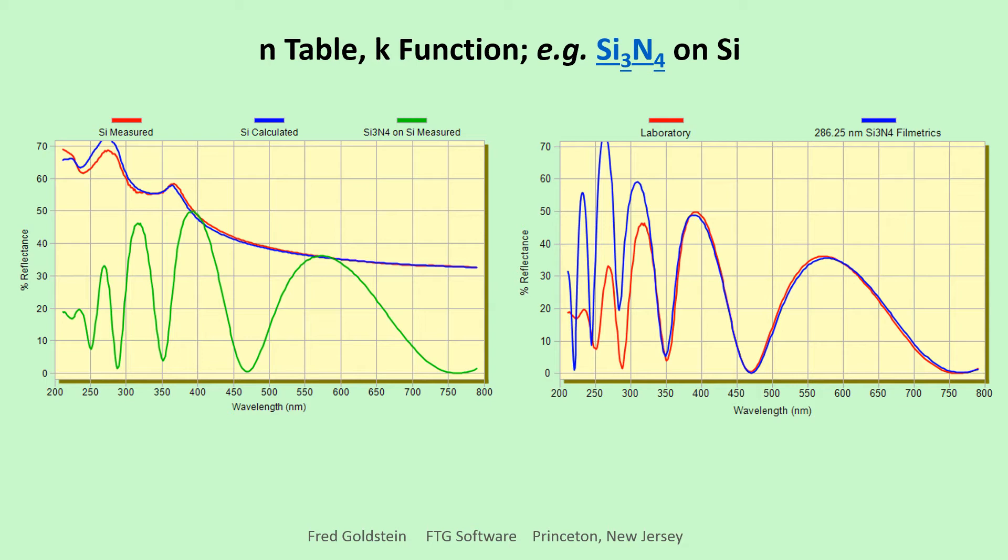Measured silicon reflectance was first compared with calculated reflectance using SOPRA's SiPoly file. While not perfect, agreement seems close enough, and the Si3N4 plot, green trace, looks reasonable.